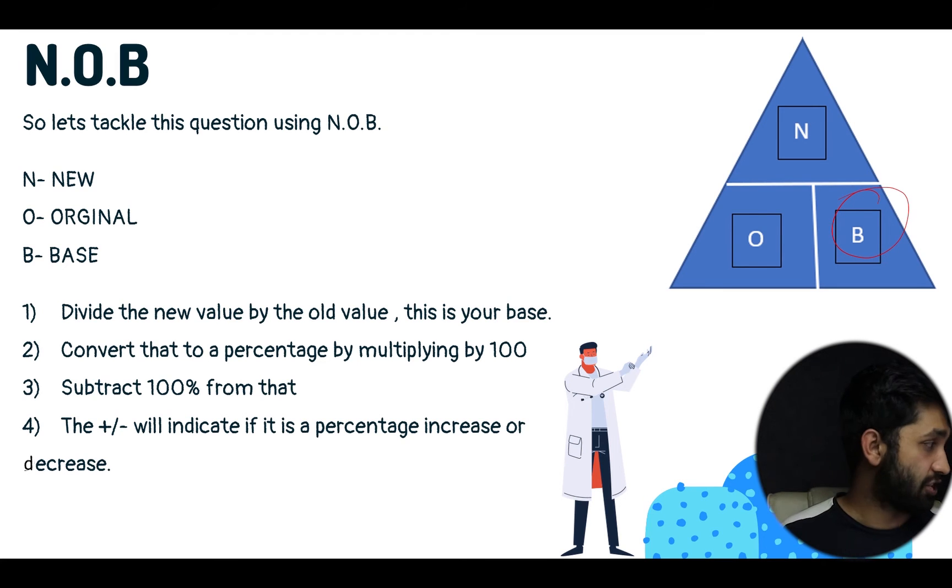Now, let's say we want to calculate the percentage change. All you have to do is divide the new value by the old value and this will be your base. Convert that to a percentage by multiplying by 100, which you should be able to do in your head. Subtract 100% from that value, and the plus or minus will indicate whether it's a percentage increase or decrease.